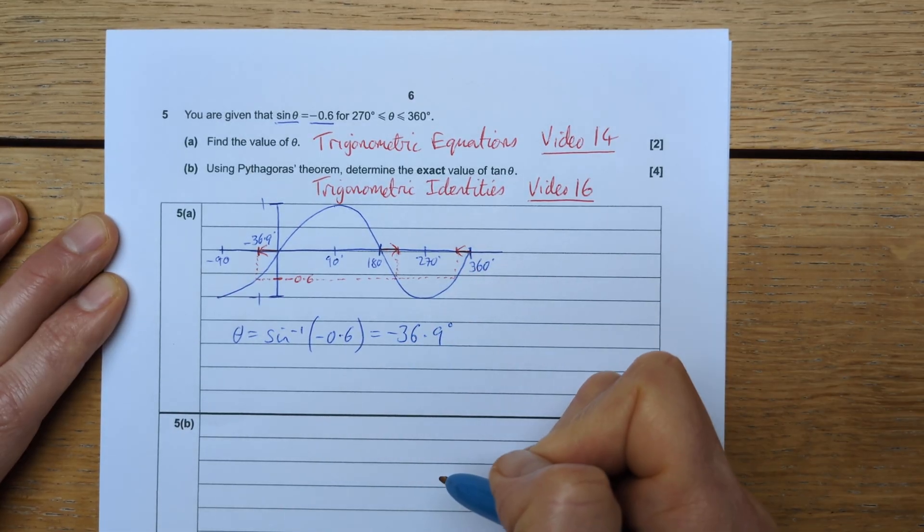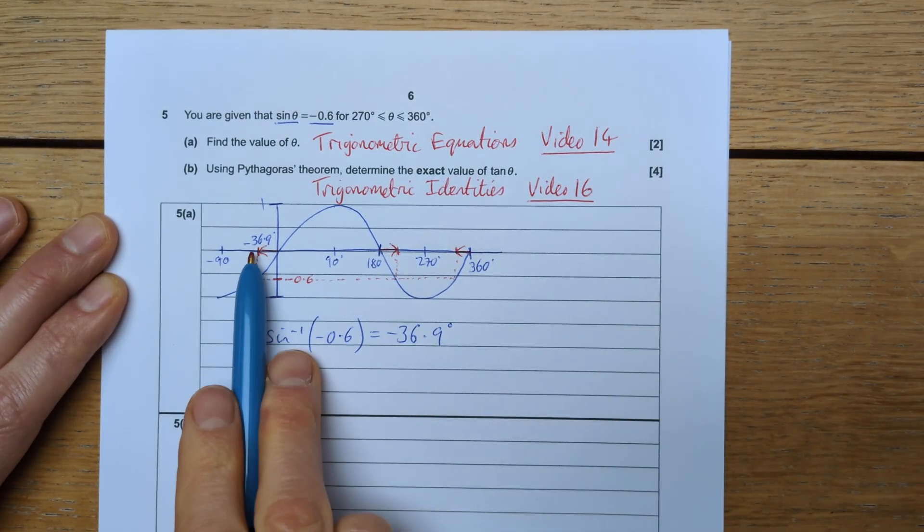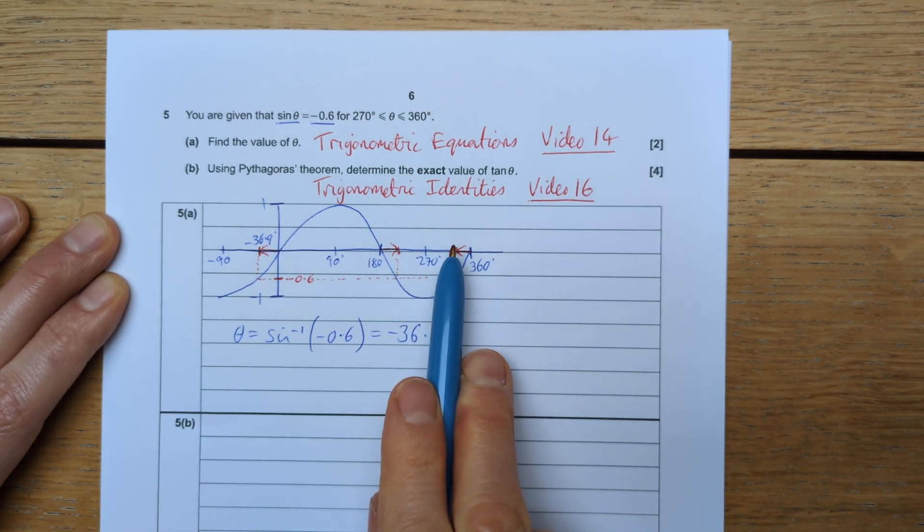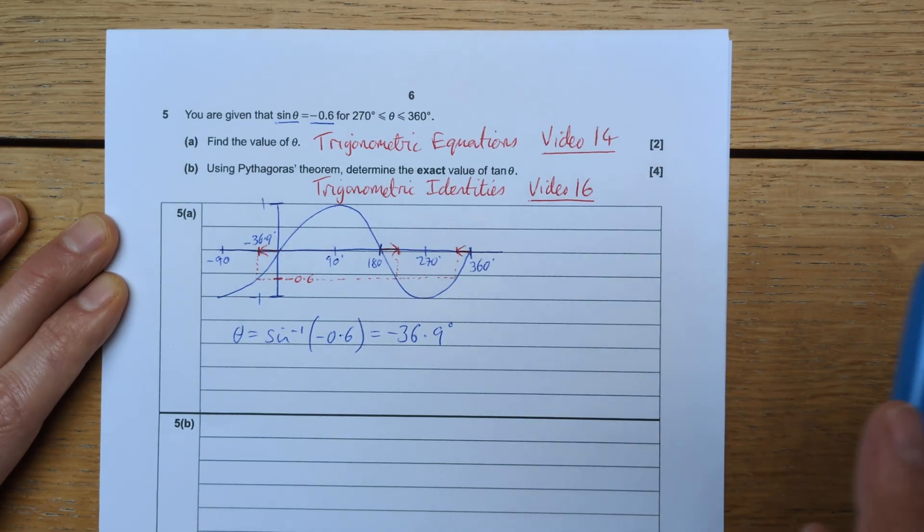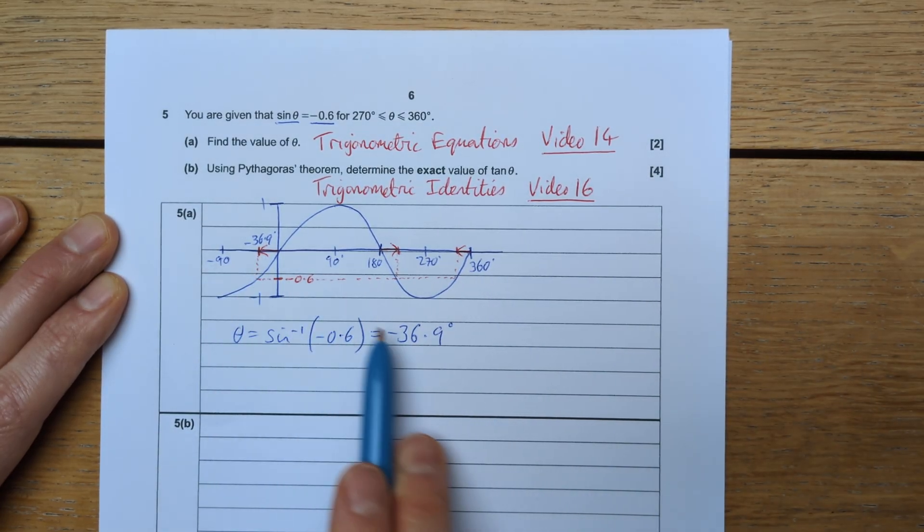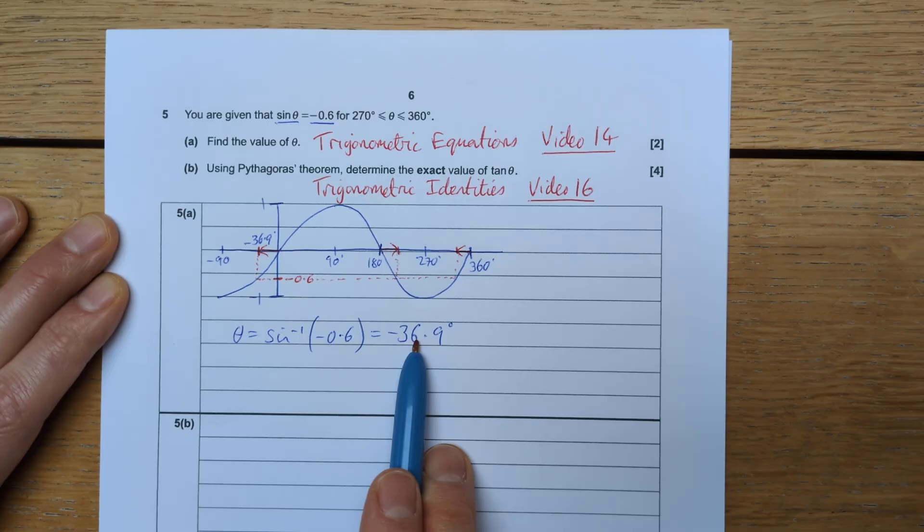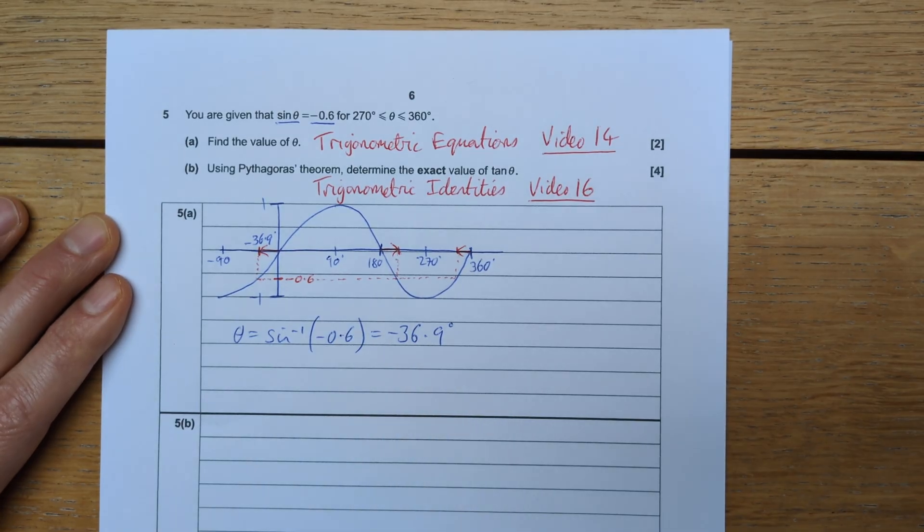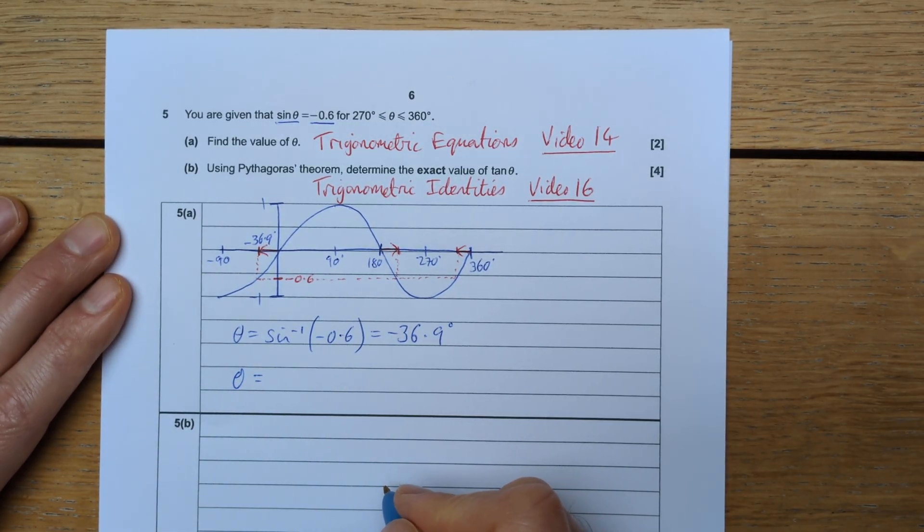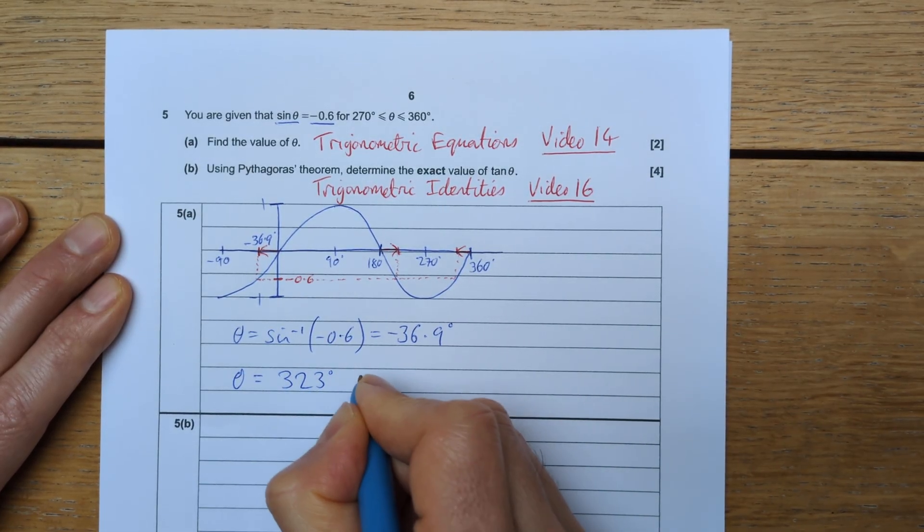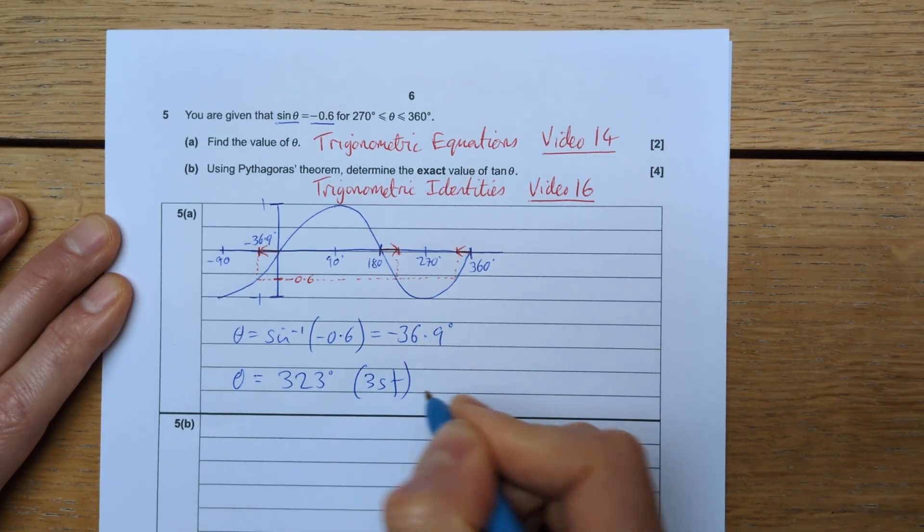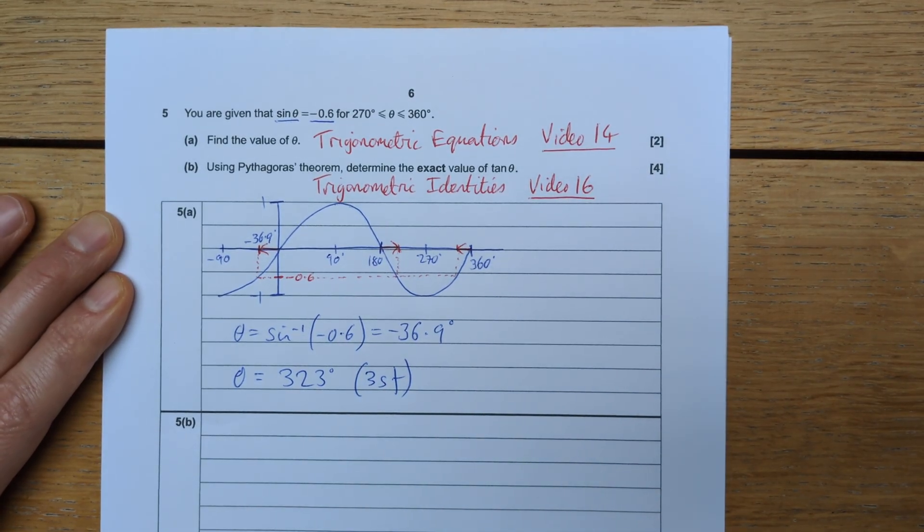This distance is also 36.9, so I would subtract 36.9 from 360. But the quickest way of doing that is this answer repeats again here, 360 degrees later. So I simply have to add 360 degrees to this, which is the same as doing 360 subtract 36.9. So my solution for theta, since it's between 270 and 360 degrees, is 323 degrees to three significant figures. So that's part A.